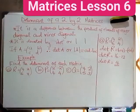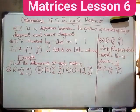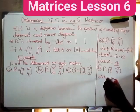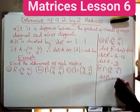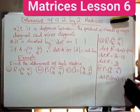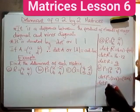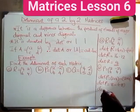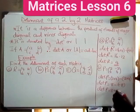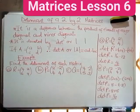Now finding the determinant of matrix P, question B. Det P equals the product of the major diagonal — negative 2 multiplied by 4 — minus the product of the minor diagonal — negative 2 multiplied by 4. That gives us 8 minus negative 8, which equals 8 plus 8. So the determinant of P is 16.